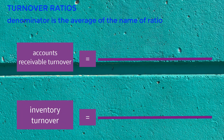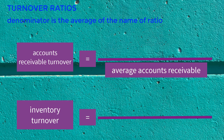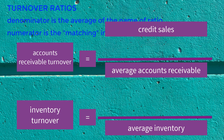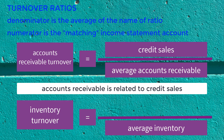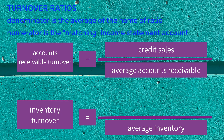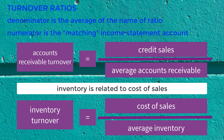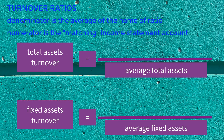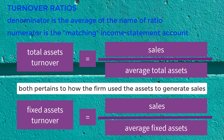For turnover ratios, the denominator is the average of the name of the ratio. For accounts receivable turnover ratio, the denominator is average accounts receivable. The same technique also applies to inventory turnover, accounts payable turnover, total assets turnover, and fixed assets turnover. The numerator is the matching income statement account. For accounts receivable turnover, the numerator is credit sales. For inventory turnover, the numerator is cost of sales. For accounts payable turnover, the numerator is purchases. Total asset turnover and fixed asset turnover have the same numerator of sales, because both pertain to how the firm uses its assets to generate sales.